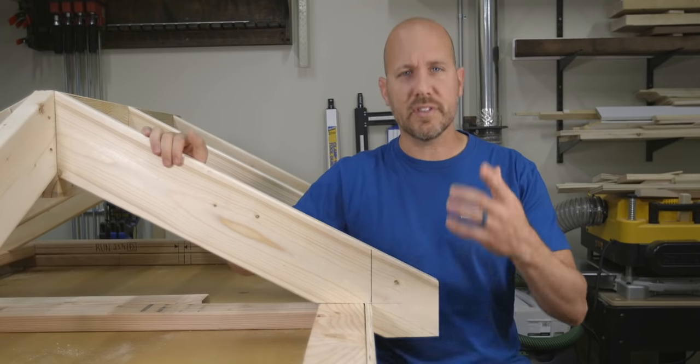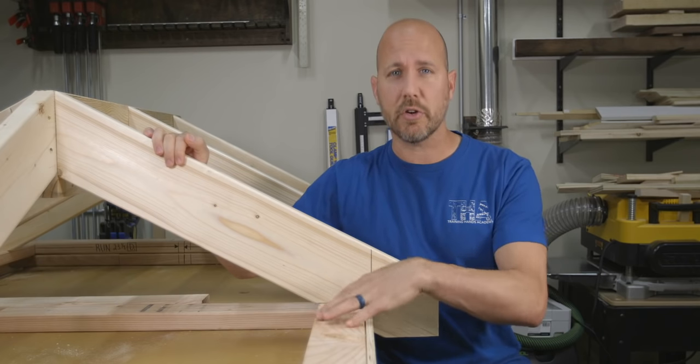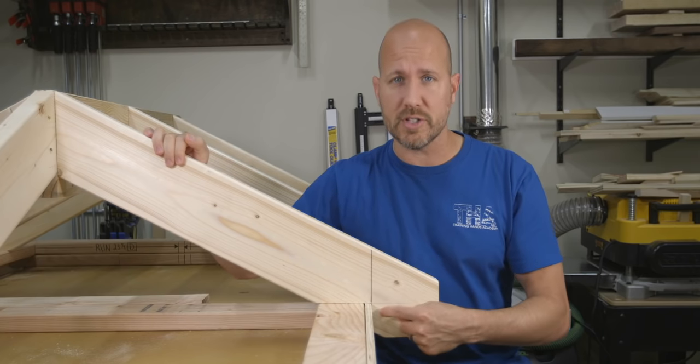On common rafters, the seat cut, which is this part here, is generally the same thickness of the exterior wall. In this case, it's four inches.